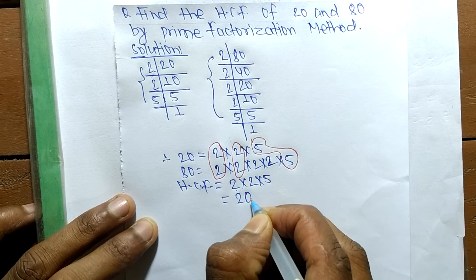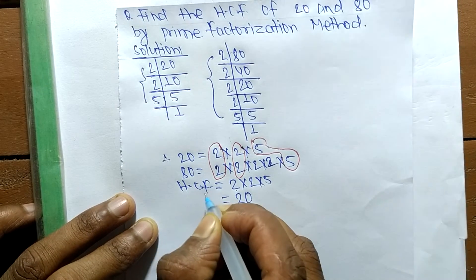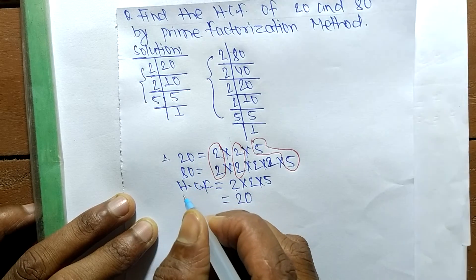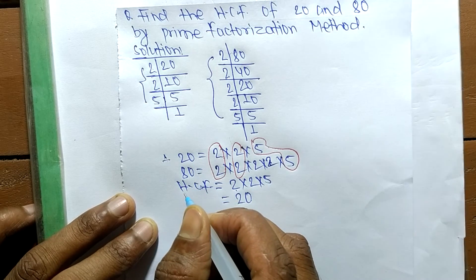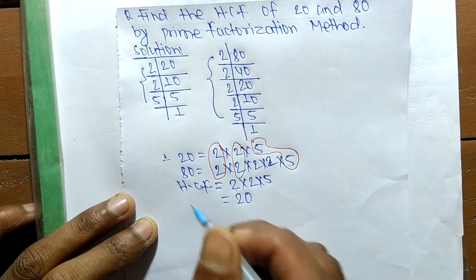So 20 is the highest common factor of 20 and 80. That's all for today, and thanks for watching.